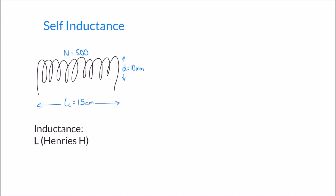We can calculate the inductance of a coil using the following formula: L equals k times mu-naught times N squared times A, all over Lc.